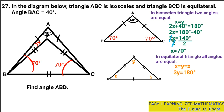We divide both sides by 3: 3Y divided by 3 gives Y, and 180 divided by 3 gives 60. So the value of Y is equal to 60 degrees. That means every angle in the equilateral triangle is 60 degrees. When you add those three 60s, they give you 180 degrees.